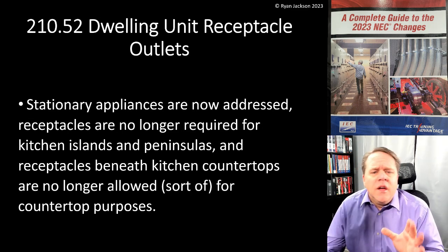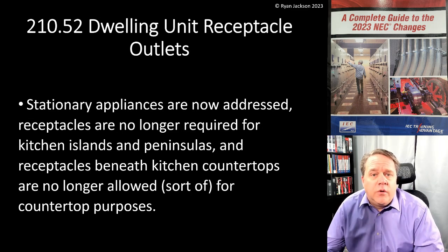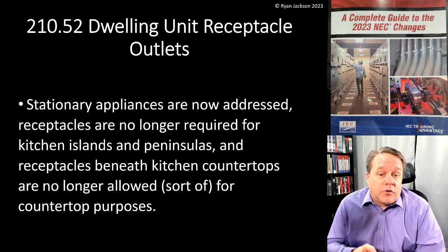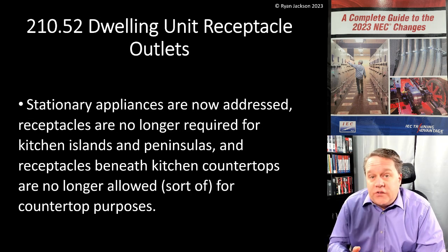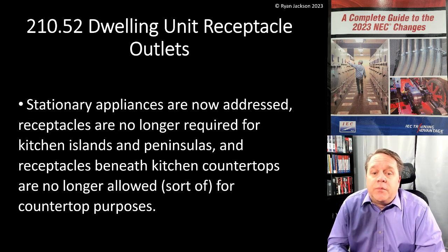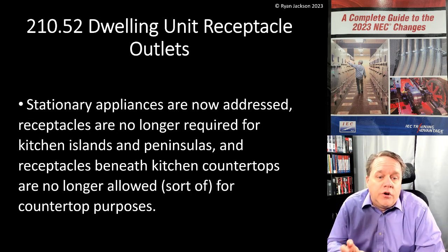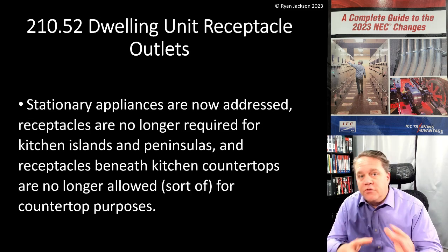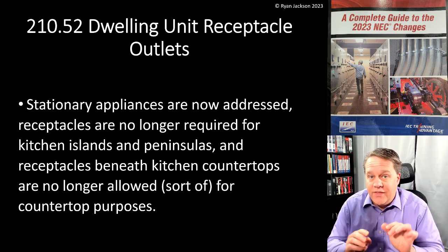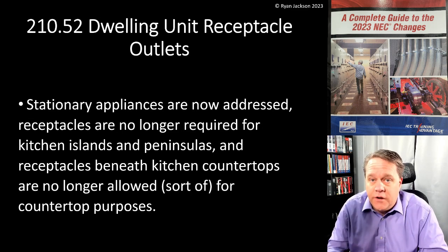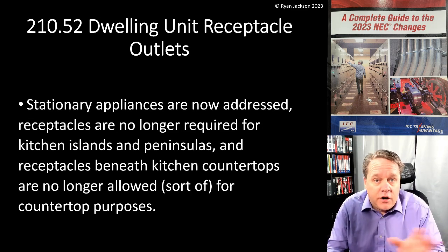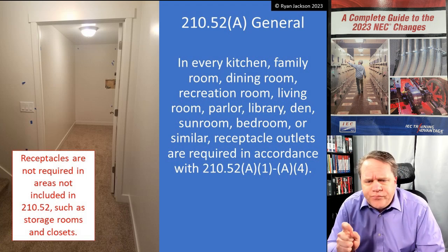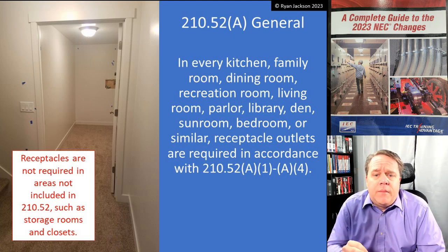Here are the key changes: stationary appliances are now addressed in 210.52, receptacles are no longer required for kitchen islands and peninsulas, and receptacles beneath kitchen countertops are no longer allowed for countertop purposes — though that one is nuanced. Let's get into 210.52A.